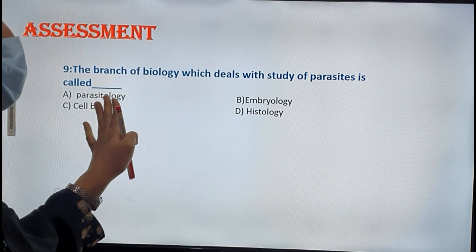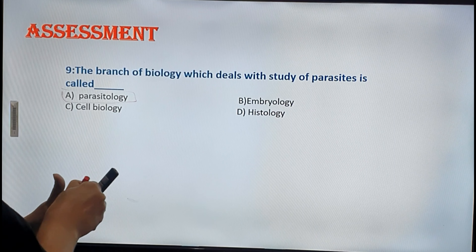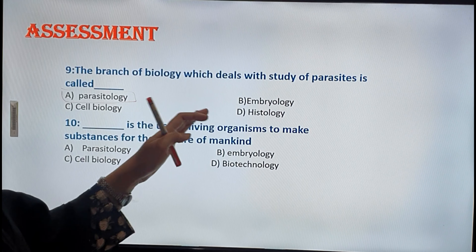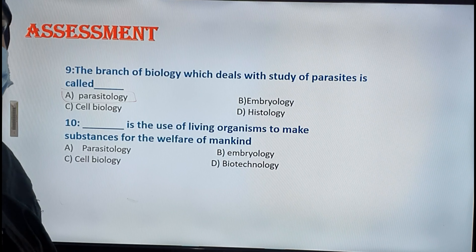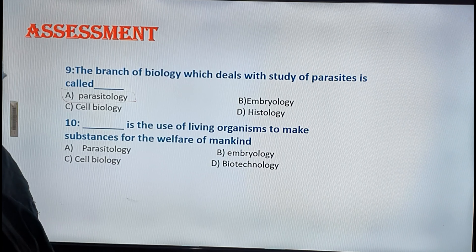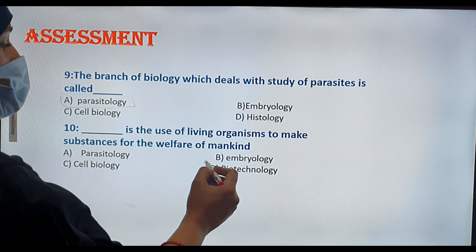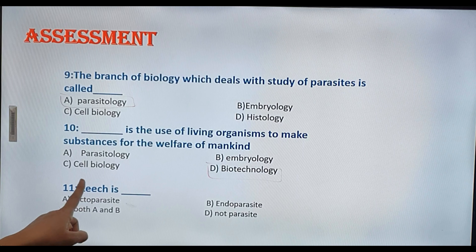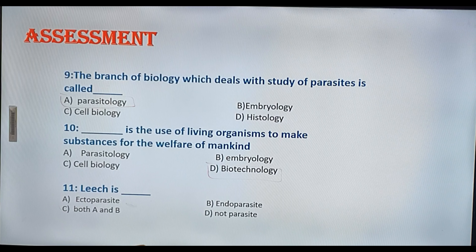The branch of biology that deals with the study of parasites is known as parasitology — option A. The next one: the study and use of living organisms to make substances for the welfare of mankind is known as biotechnology — option D.